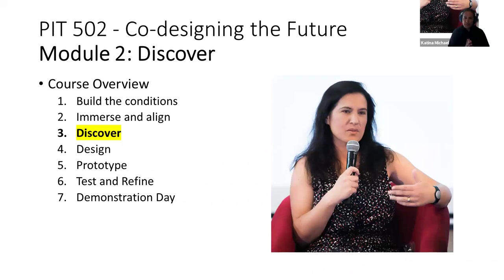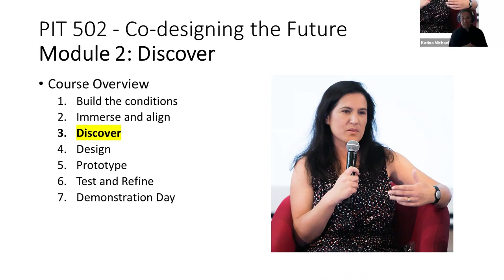We're at week three — the discover stage. We've finished 'build the conditions,' 'immerse and align,' and now we're at discover. In week one, we brainstormed about public interest technology. We then immersed ourselves in the literature, aligned with key stakeholders, and conducted an interview. You conducted the interview, transcribed it, cleaned it up, and perhaps went back to the interviewee to confirm they were happy with the output. Next week we move toward design.